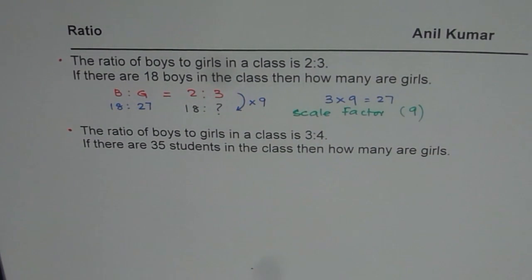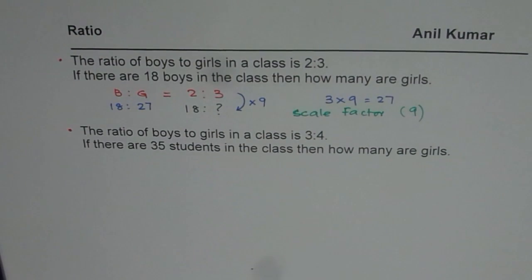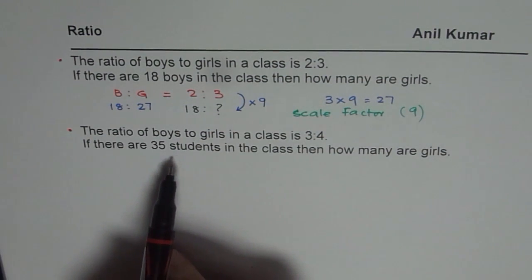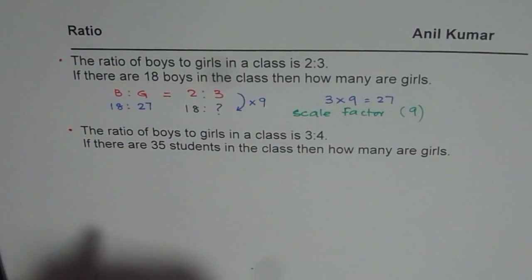Now let's look into the second question. It says the ratio of boys to girls in the class is 3 is to 4. There are 35 students in the class, then how many are girls? Now this question is slightly different. What we are really given is the total number of students.